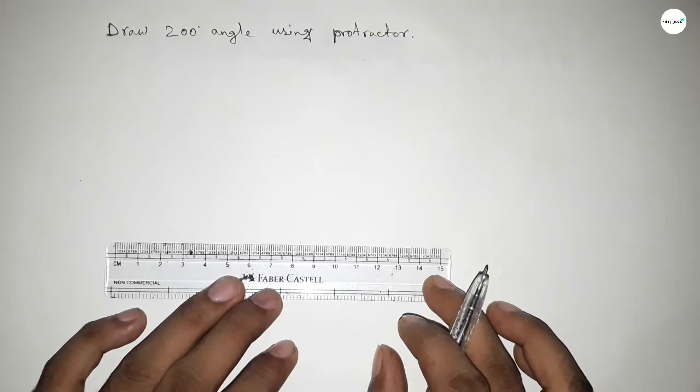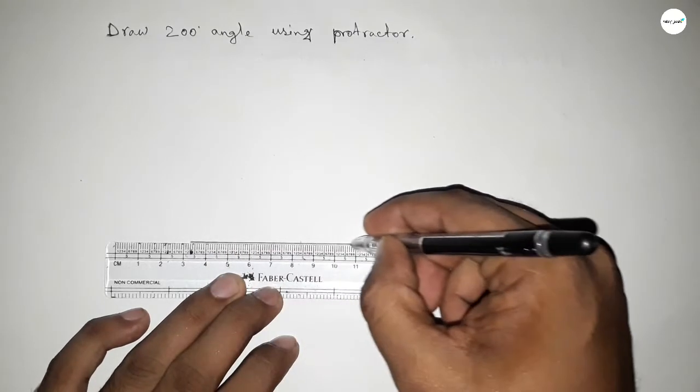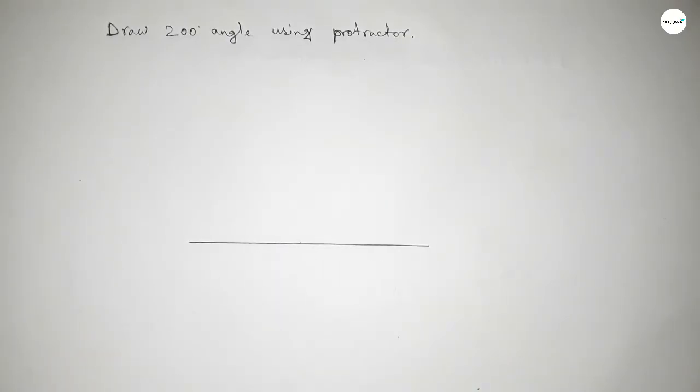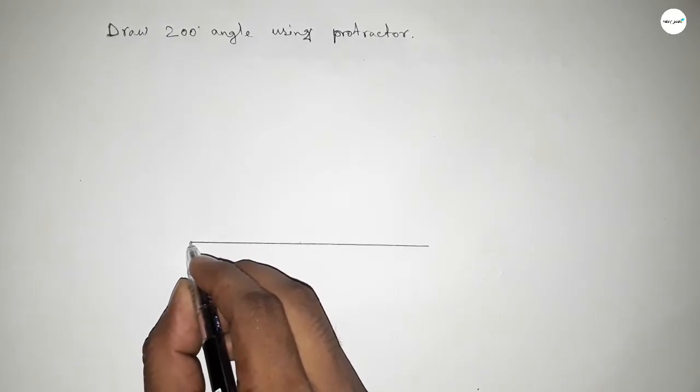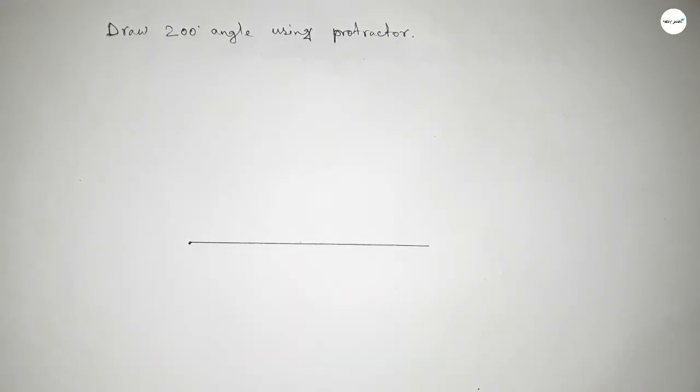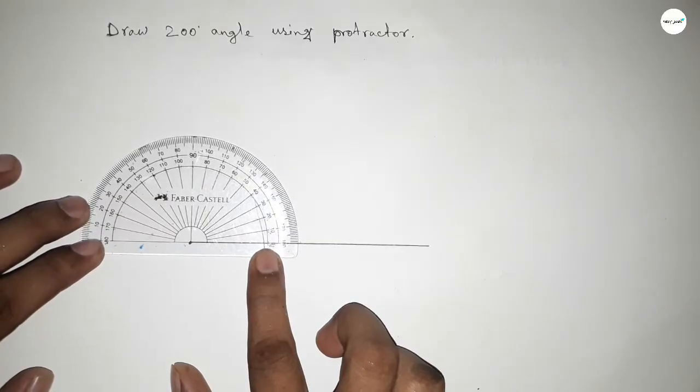Here of any length, so first we have to draw a line here. Next, pointing here to draw a 200 degree angle on this point. Okay, now putting the protractor on the line perfectly.